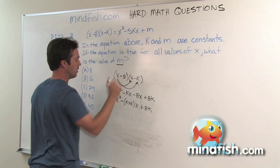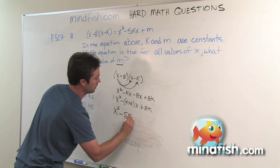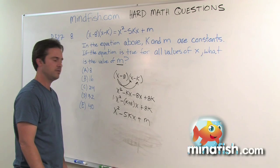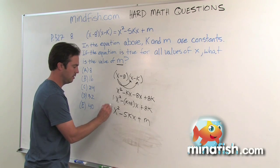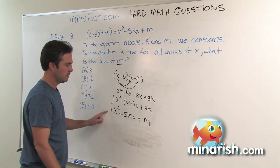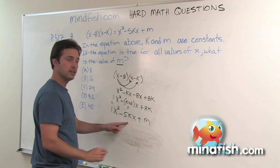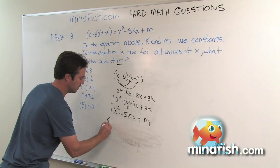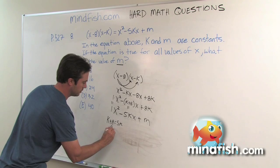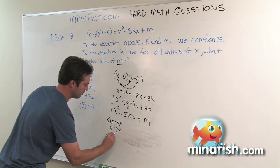Now we bring down our other quadratic equation: x squared minus five kx plus m. The idea behind quadratic equivalence is that the coefficients have to be the same. The coefficient of one in front of x squared is already the same. So k plus eight has to equal five k. Solving that: k plus eight equals five k, so eight equals four k, which means k equals two.